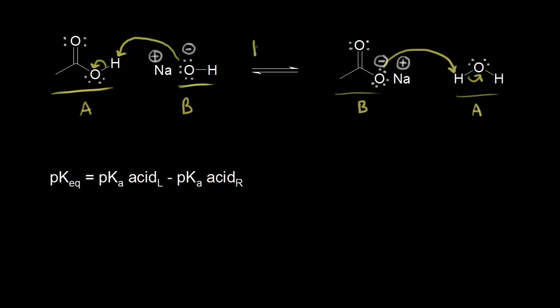What if our goal was to find the equilibrium constant for the forward reaction? We could figure that out just using pKa values. If we know the pKa values for the two acids in our reaction, we can figure out the equilibrium constant for that reaction.